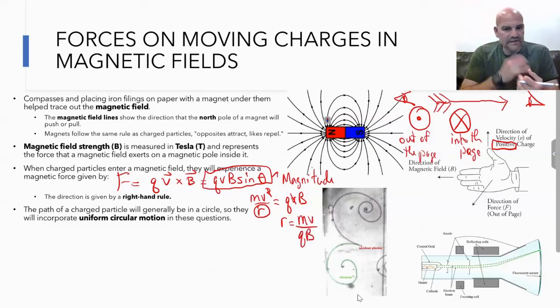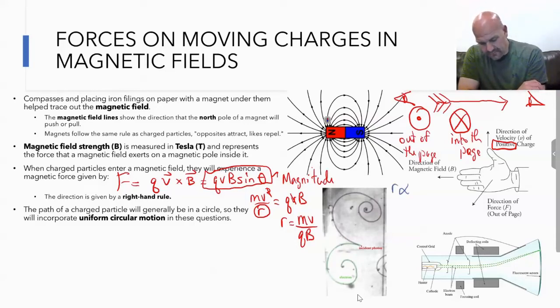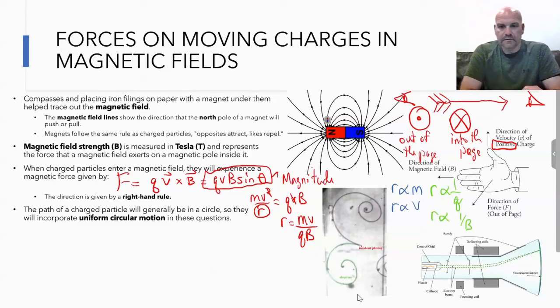You can see some relationships established here with r. R is directly proportional to mass, so the larger the mass, the bigger the radius. It's also directly proportional to v, so the larger the velocity, the larger the radius. But it's inversely proportional to q, the charge, and also inversely proportional to the magnetic field. So the larger q, smaller r, and larger B, smaller r.